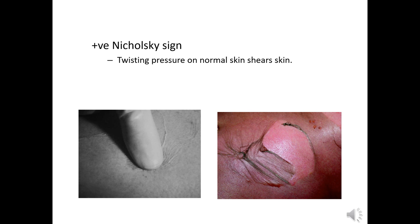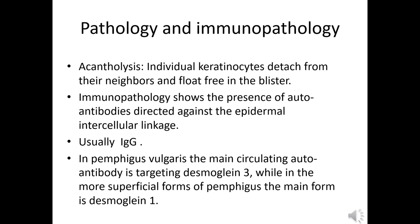Nikolsky's sign is detected by applying twisting pressure on normal skin. We see that the skin easily shears between our fingers and separates from the underlying layer. Regarding pathology and immunopathology of pemphigus vulgaris: number one is acantholysis, where individual keratinocytes detach from neighbor cells and become protein-free within the blister fluid. Immunopathology shows autoantibodies directed against the epidermal intercellular linkage, with immunoglobulin G type detected.